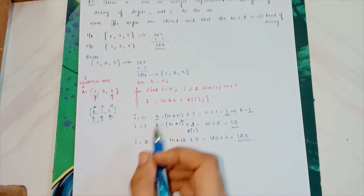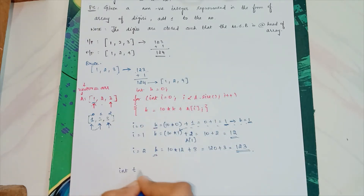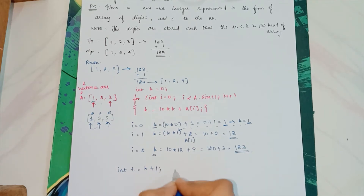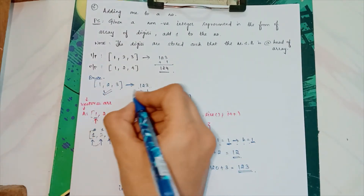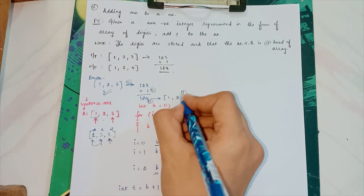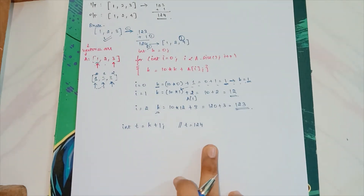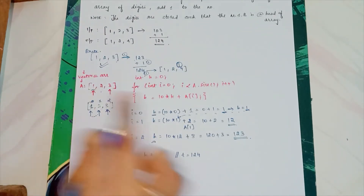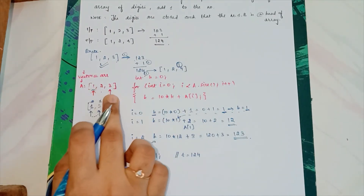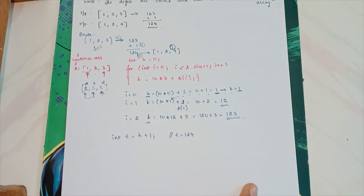Now I have the number, so I can simply add 1: int T = K + 1. T will store the value 124. The conversion step is done and the addition step is done. Now we are pending with the last step: splitting 124 back into [1, 2, 4]. This is actually the reverse process — converting a single integer back into an array of digits.